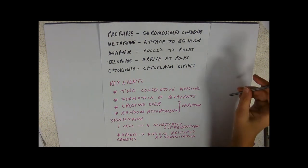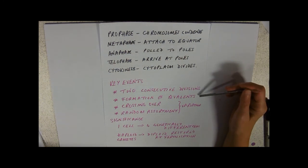The other key event in meiosis is that at the beginning, in that very beginning of prophase, we're going to form bivalents out of our homologous pairs.